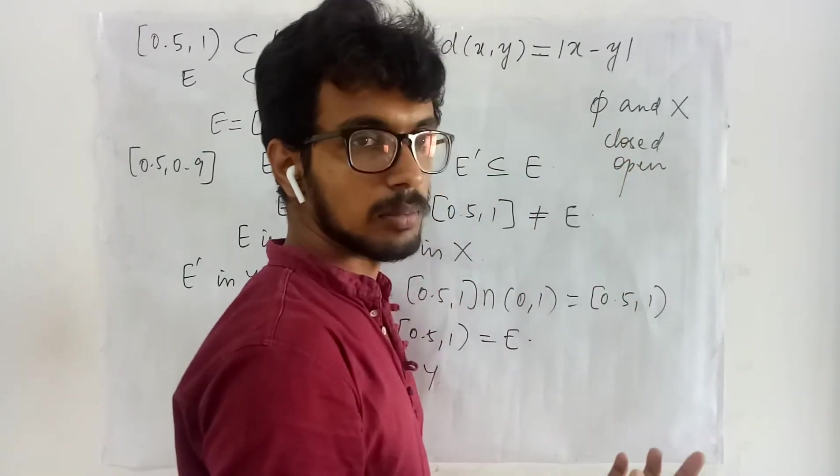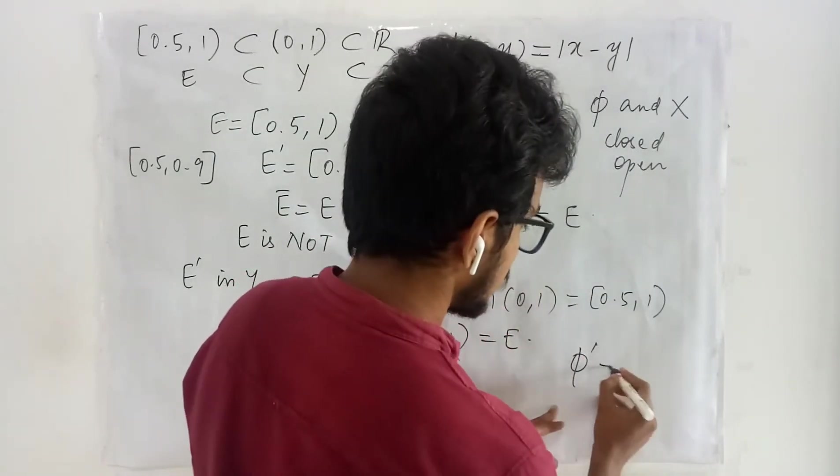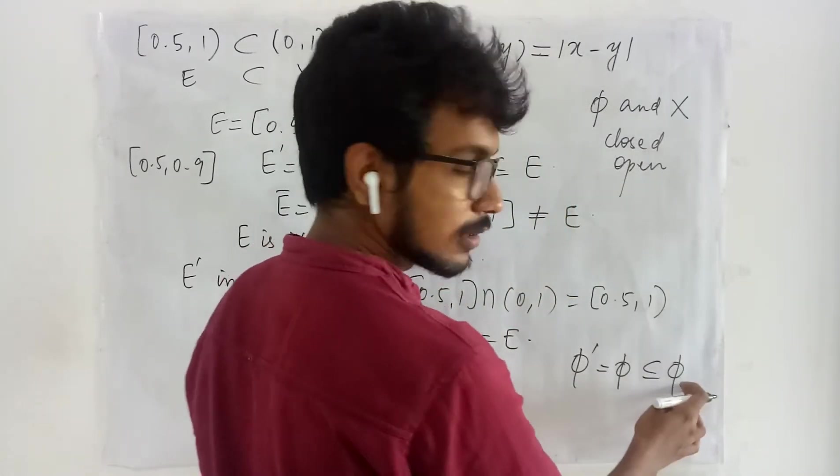This empty set has no limit points. Therefore for empty set the collection of limit points is empty which is contained in empty itself. That is why it is closed.